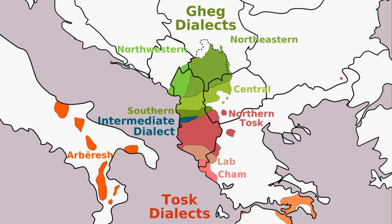Tosk and Geg are the two major dialects of the Albanian language. Tosk is spoken in the South of Albania, North Macedonia, Greece and Italy. On the other hand, Geg is spoken in the North of Albania, Kosova, North Macedonia, Serbia and Montenegro.